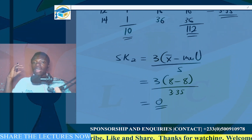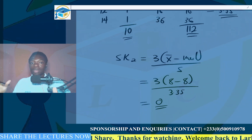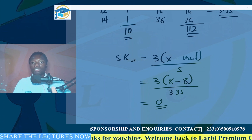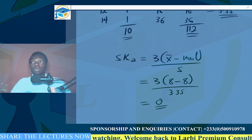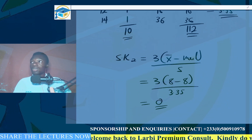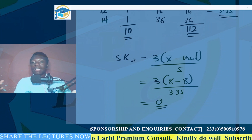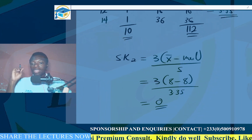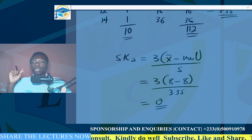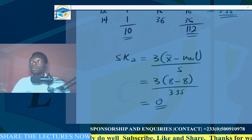A coefficient of skewness of 0 confirms what Karl Pearson proposed. A value of 0 indicates a symmetrical distribution — a normal distribution. When represented on a graph, this data will show a normal bell-shaped distribution. If the value were positive, it would indicate positive skewness; if negative, it would indicate negative skewness.